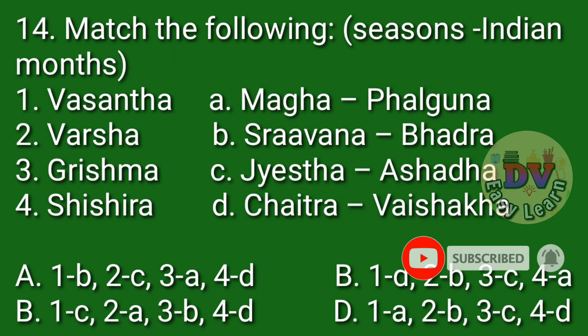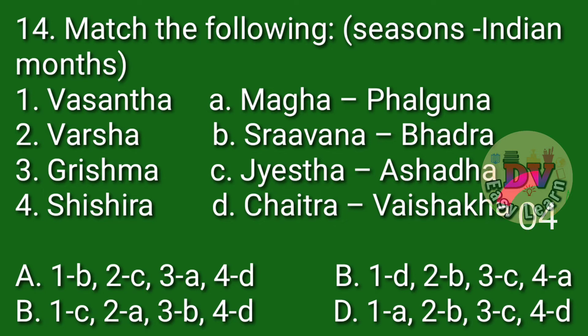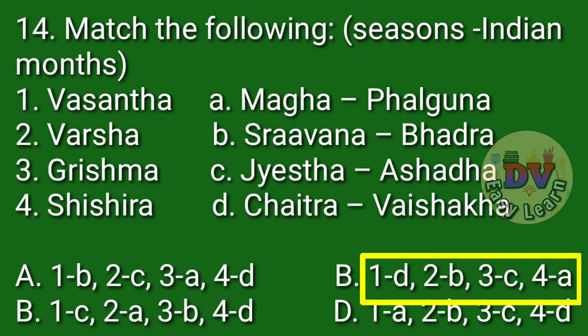Question number 14. Match the following: Seasons and Indian months. Correct option: 1-D, 2-B, 3-C, 4-A. Vasanta: Chaitra and Vaishaka; Varsha: Shravan and Bhadra; Grishma: Jesta and Ashada; Shishira: Magha and Falguna.